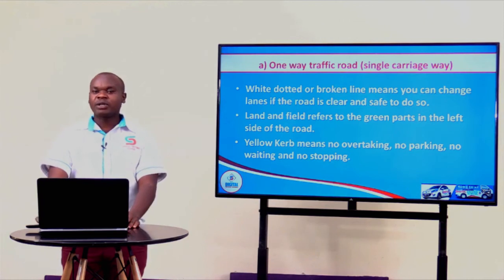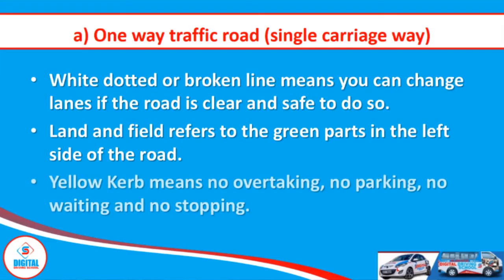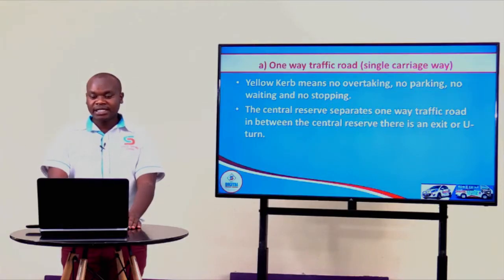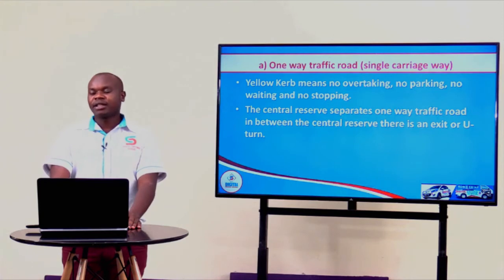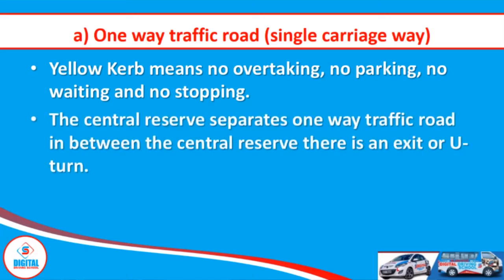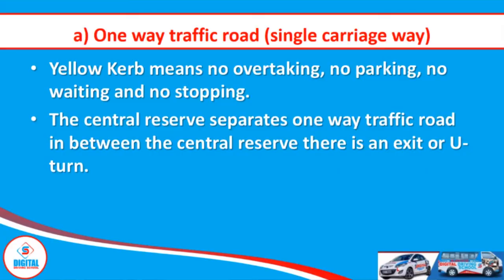Those yellow markings at the edges of the green fields are called the yellow curves. At this particular point you are not supposed to overtake, park, wait, or stop. Between our one-way traffic roads we have things called the central reserves or the pavements. Anything that separates a one-way traffic road is called a central reserve. On this central reserve we are going to see our next feature called a U-turn.